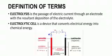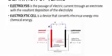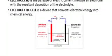I will start with the definition of electrolysis. Electrolysis is the passage of electric current through an electrolyte with the resultant decomposition of the electrolyte. There are two types of cells: the electrolytic cell and the electrochemical cell. The electrolytic cell is a device that converts electric energy into chemical energy. As illustrated in the diagram, you can see it is made up of two electrodes, the red and the black, and the arrow shows the flow of electrons from the anode to the cathode.